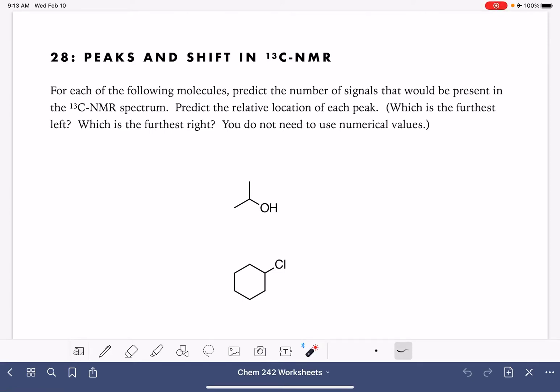On this worksheet, we're going to practice predicting the number of peaks in a carbon-13 NMR spectrum and also predicting the relative position or location of each peak, the chemical shift of each peak.